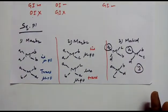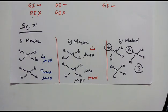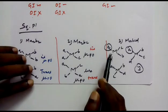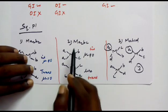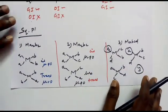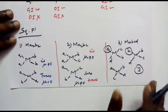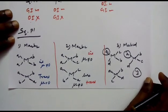Since square planar complexes exhibit no optical isomers, the total number of stereoisomers equals the total number of geometrical isomers. For MABCD type: three geometrical isomers, so three stereoisomers. For MA₂B₂ and MA₂BC types: two geometrical isomers each, so two stereoisomers. Number of geometrical isomers equals number of stereoisomers for square planar complexes because they are optically inactive.